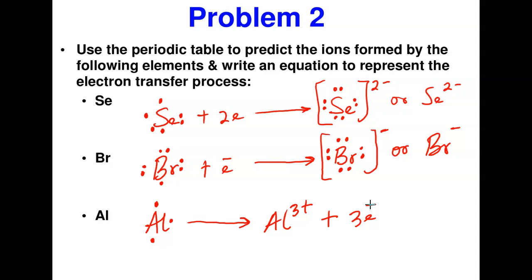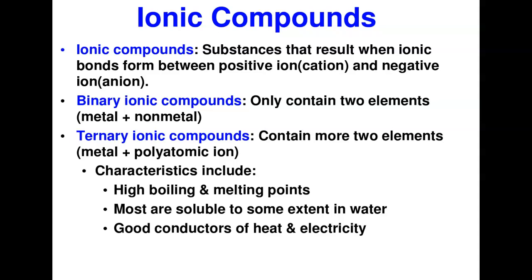What is an ionic compound? Ionic compounds are the consequence of an ionic bond — they are substances formed when ionic bonds form between a positive ion (cation) and a negative ion (anion). There are different ways to classify ionic compounds, but for convenience, let's use a classification that will help us in naming. There are two types: binary compounds, which contain only two elements (a metal and a non-metal), and ternary ionic compounds, which contain more than two elements.